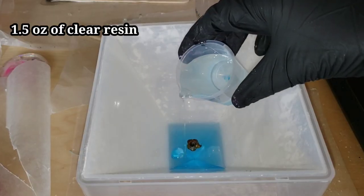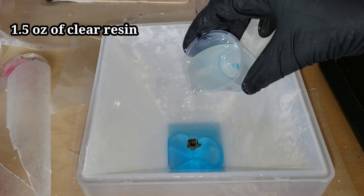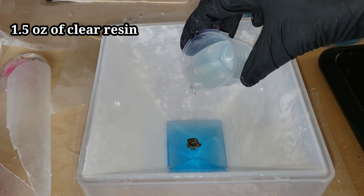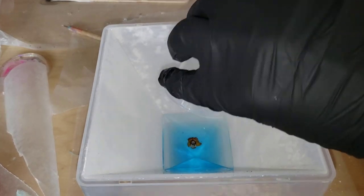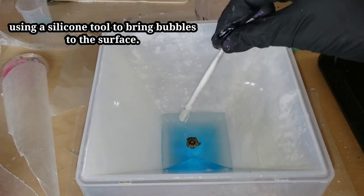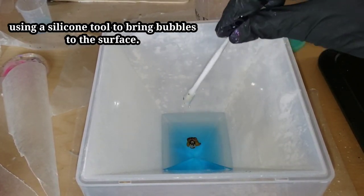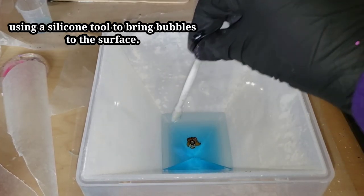Then I'm going to go in and sprinkle some iridescent sparkle. It's really chunky glitter from Laura's Art Corner. I'm going to sprinkle that on the bottom of this layer.